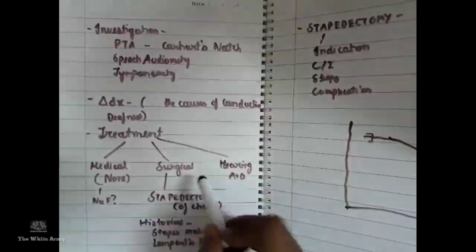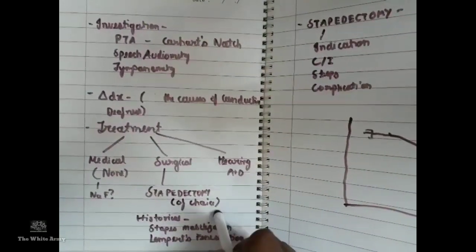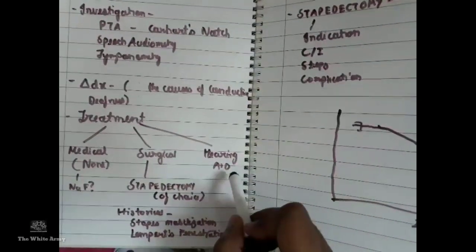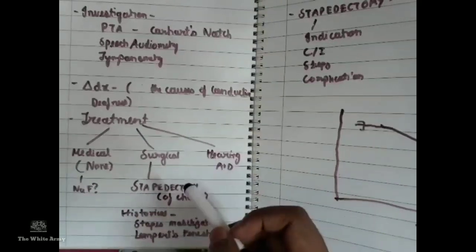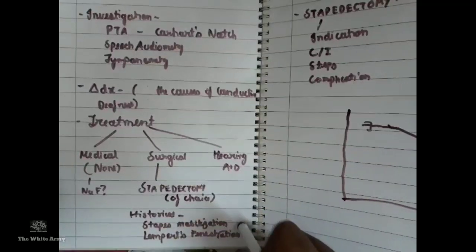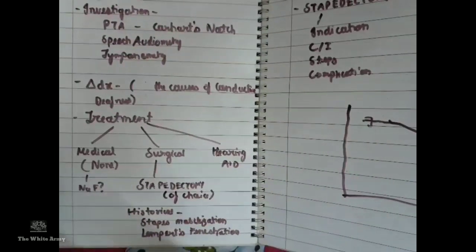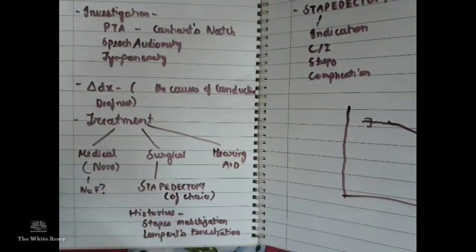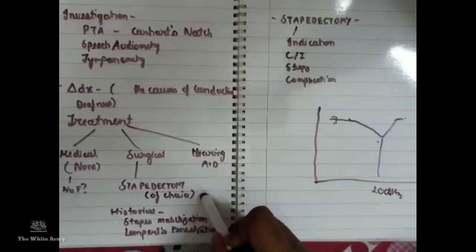The surgical treatment of choice is stapedectomy or stapedotomy. Historical surgeries include stapes mobilization and Lempert's fenestration — which involves making another window along the medial wall of the lateral semicircular canal in the medial wall of the tympanic cavity — however this does not completely treat the disease. Hearing aid is used when the patient doesn't want surgery or has contraindications.